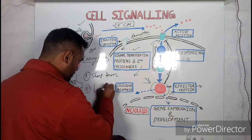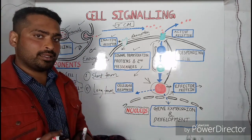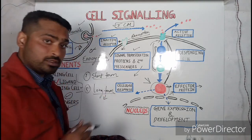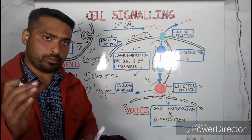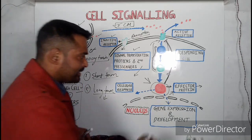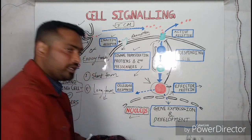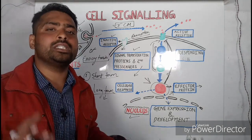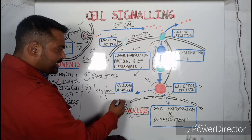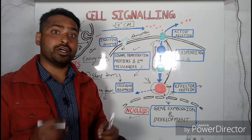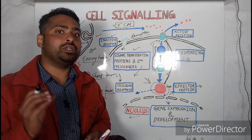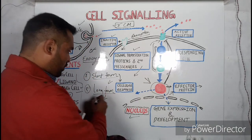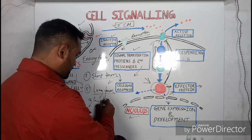The response from the effector protein can be of two types: short-term and long-term. Short-term means the response which is for a shorter period of time — like milliseconds to seconds. Long-term means the responses which happen for a longer period of time. The long-term responses occur in the nucleus of the cell, where we have DNA and genes, so these represent changes in gene expression and development of genes. The short-term response represents any change in the metabolic activity or metabolic state of the cell.